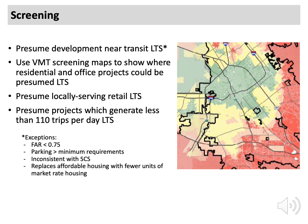OPR recommends mapping existing low residential VMT areas, as pictured here, as well as low office VMT areas, and presuming those types of projects in those areas less than significant. Locally serving retail, which tends to reduce the distance one needs to travel to shop, can also be presumed less than significant.